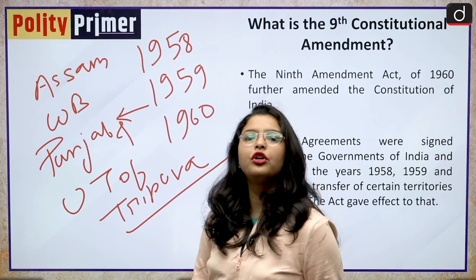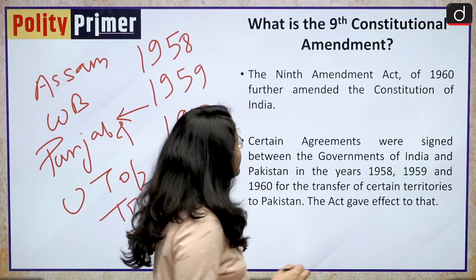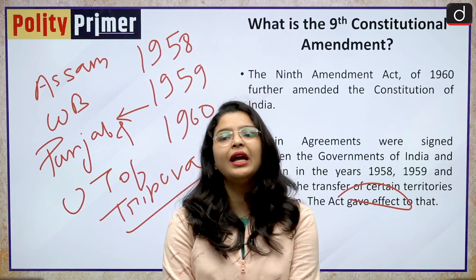At that point of time, Tripura was a union territory and not a state. Basically, the purpose of the 9th Constitutional Amendment Act was to give effect to these agreements that were ongoing between the government of India and the government of Pakistan to resolve all of the border disputes.